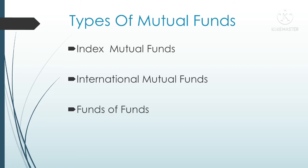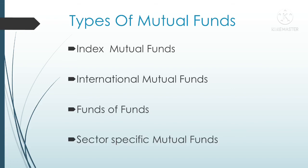The next type is funds of funds. These mutual funds take different mutual funds in their portfolio, and their performance depends upon those underlying mutual funds — since several mutual funds are held within this fund, it is called a fund of funds. The next type is sector-specific mutual funds, where you can select any sector such as FMCG or auto and invest in that particular sector's mutual fund. Your returns will depend upon the performance of that sector.